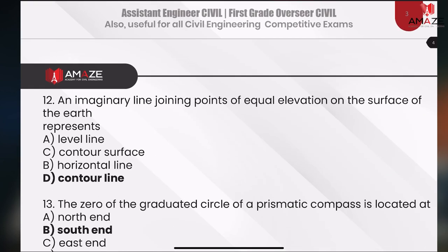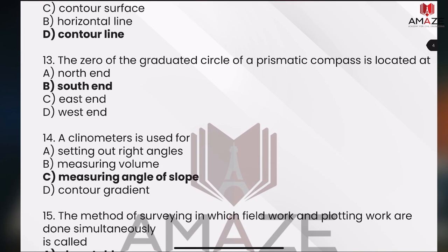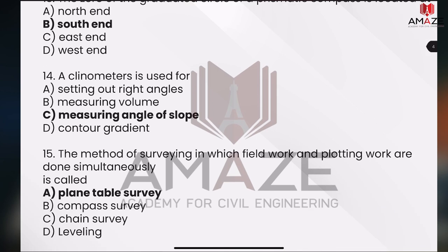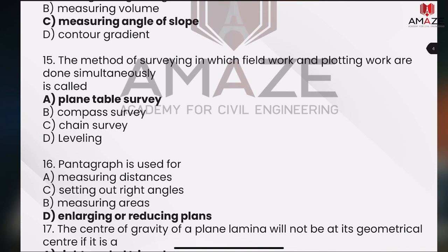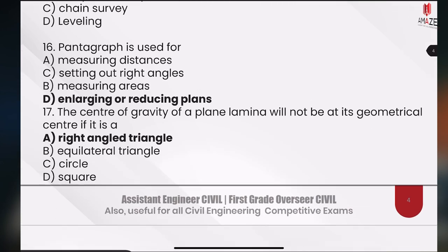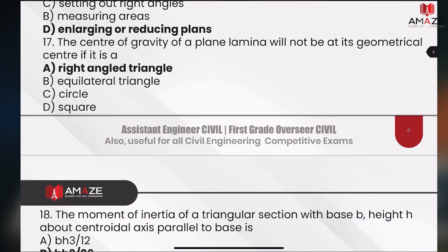You can find the contouring. The survey — prismatic composition, the clinometer, the plane table survey, the pantograph, the mechanics — center of gravity.